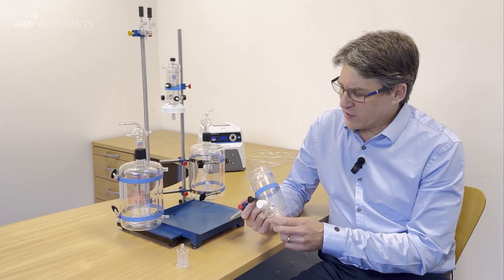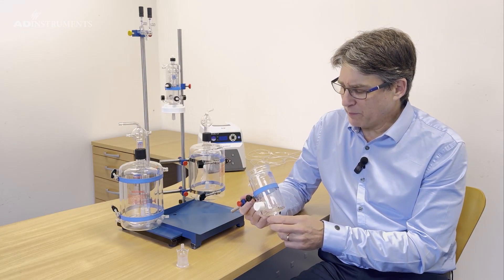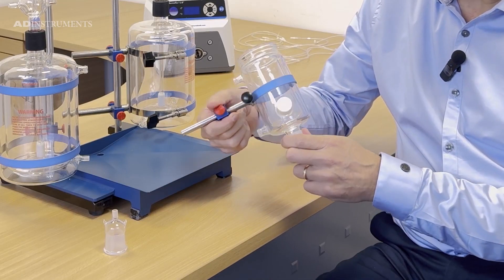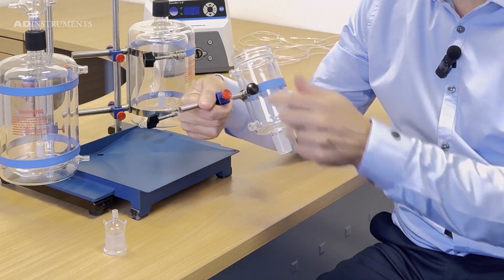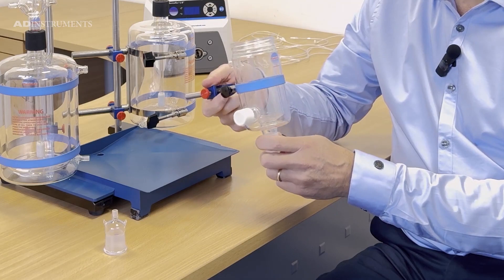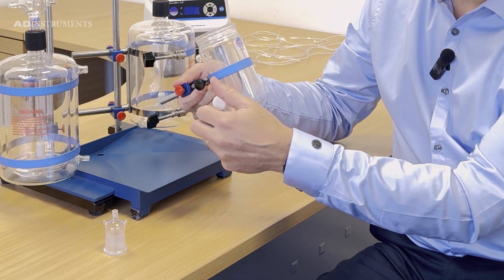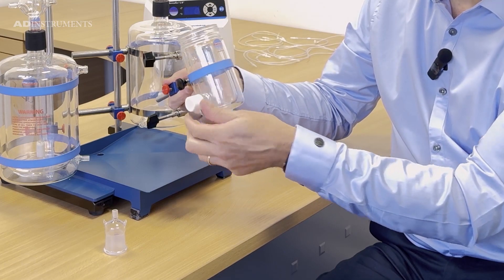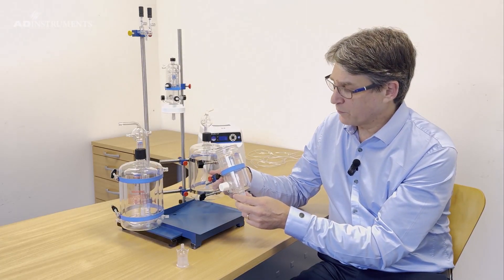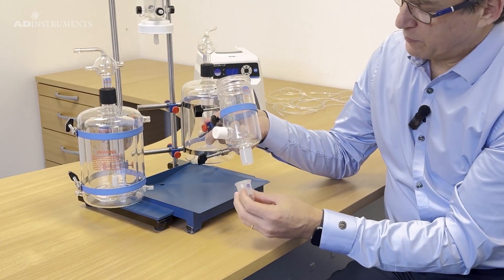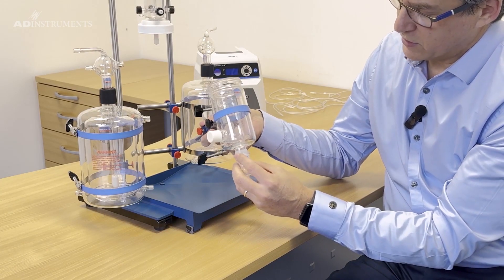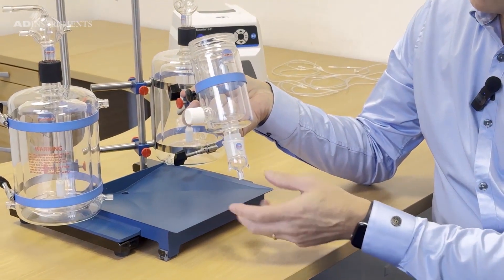The last glassware component is the heart chamber which is water jacketed. It has an input and an output port to keep the heart warm. It also has a port for a pulley system in case you want to do apical force measurements, and this adapter at the bottom connects any two-way or three-way taps.